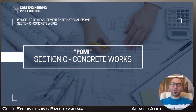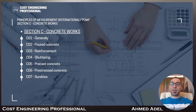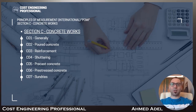Hello and welcome to Costa Engineering Professional. I am Ahmad Adal, and in this video we'll be talking about Section C, which is concrete works in accordance with Principles of Measurement International. This section consists of poured concrete, reinforcement, shuttering, precast concrete, pre-stressed concrete, and sundries. I've explained up to subsection C3 in a previous video, so now I'm starting from subsection C4.